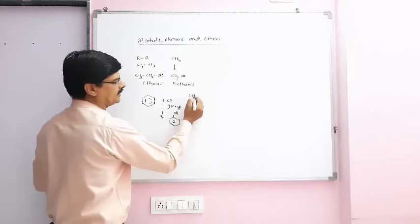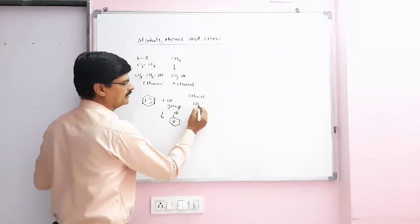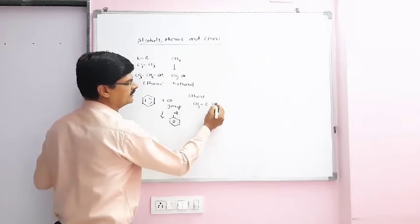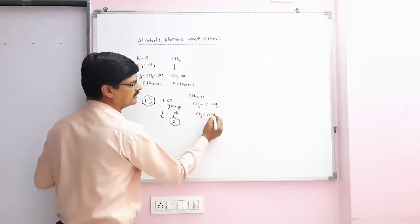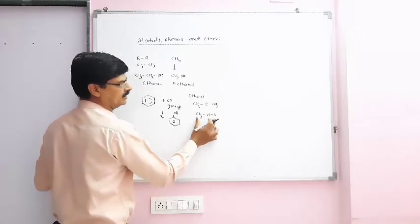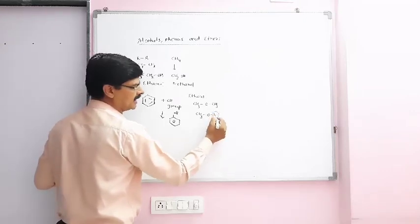And for ethers, we have CH3OCH3. So, consider CH3OH, methanol.